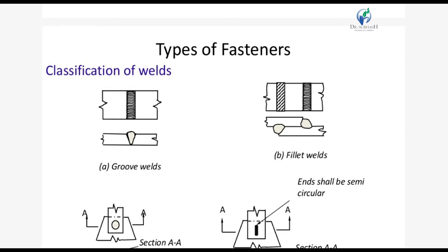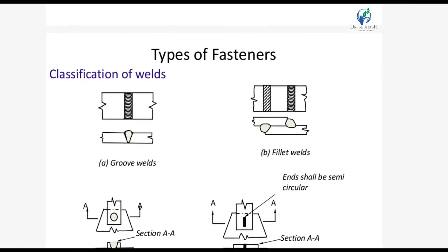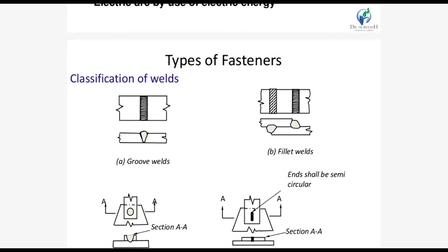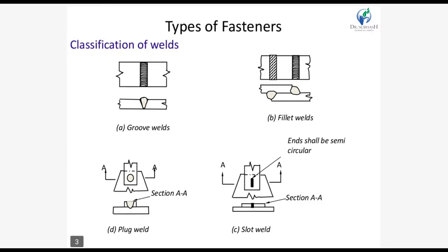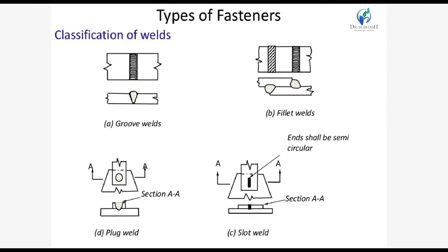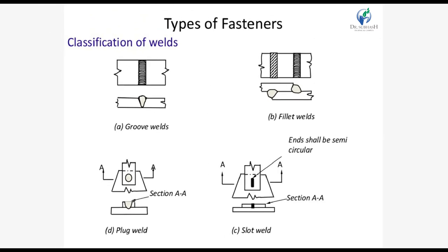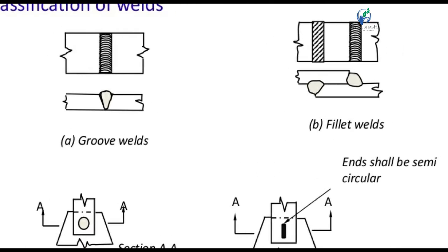Fillet welds are used in approximately 80% of applications in the field, while groove welds are used in about 15%, and the remaining 5% are plug and slot welds used in special cases. Groove welds are normally used for butt joints to connect two members aligned in the same plane. The groove has a slope of 30 to 60 degrees variance.